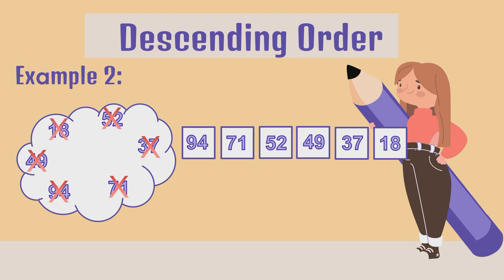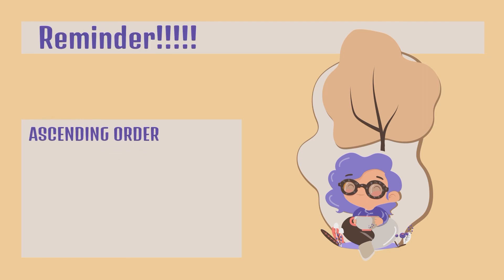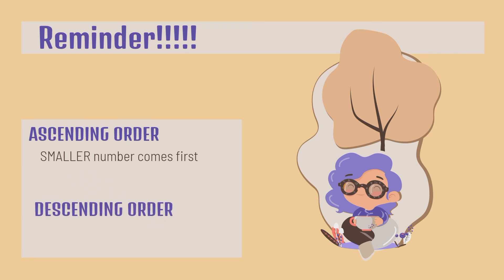Good job, everybody. We have to remember: descending order, we started with the biggest number. Here's a reminder for everyone. Ascending order — smaller number comes first. And for descending order — bigger number comes first.